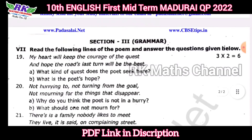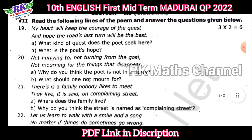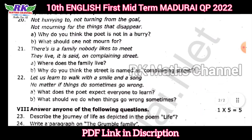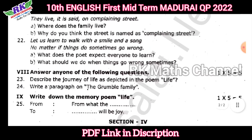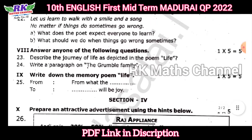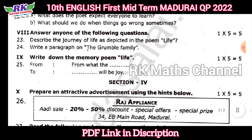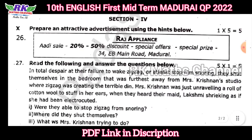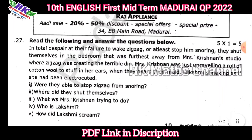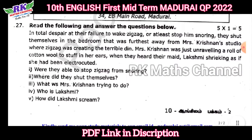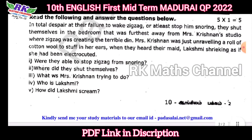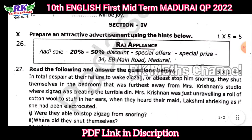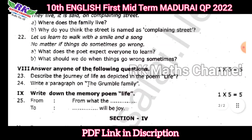Grammar again, 6 marks. Next, answer any one of the following questions — one question is 5 marks. Memory poem, one more. Advertisement, prepare. And paragraph questions. This is the last year Madurai district question paper.